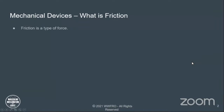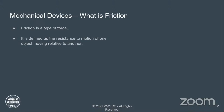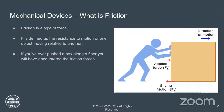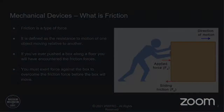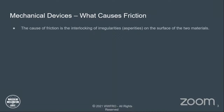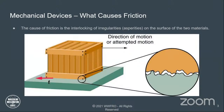So what is friction? Friction is a type of force, defined as the resistance to motion of one object moving relative to another. If you've ever pushed a box along the floor, you will have encountered friction forces. You must exert force against the box to overcome the friction force before the box will move.